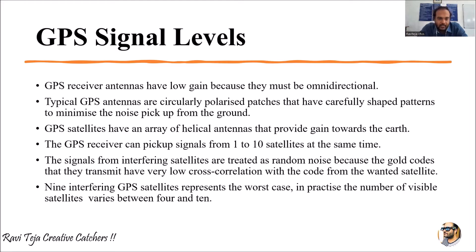We have already talked about low-cost GPS receivers used for general-purpose services and sophisticated GPS receivers used for defense or military applications. Any GPS receiver can pick up signals from around one to ten satellites at the same time, but mostly we consider three to four satellites in order to establish a global positioning system.